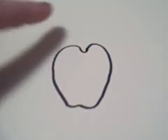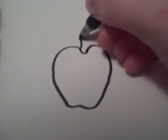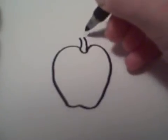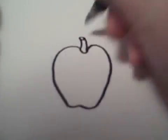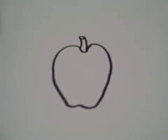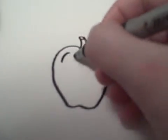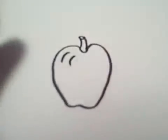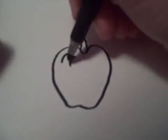Then you can connect that like that and add two curved lines coming from the top. You can draw another circle at the top there and two lines that are the same just different spaces and then connect them like that.